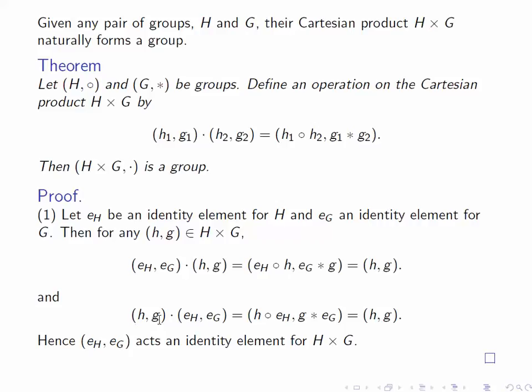Similarly, when we multiply (h,g) on the right by (E_H, E_G), we again get (h,g). So we've verified that (E_H, E_G) does indeed satisfy the requirements of being an identity element for H cross G.